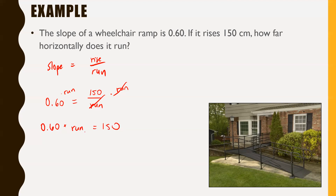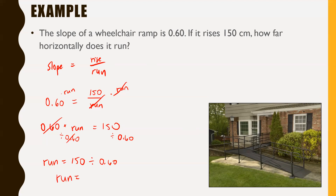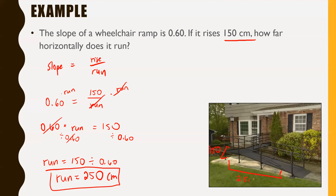Now to get rid of the 0.60, divide both sides by 0.60 — since the opposite of multiplying is dividing. This gives: run = 150 / 0.60. Throwing that in the calculator: run = 250. Since the rise was 150 centimeters, the run is also 250 centimeters. So as this ramp goes up by 150, it runs by 250, which gives it a slope of 0.60.